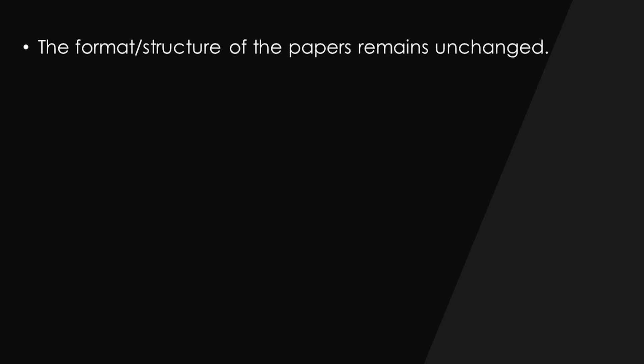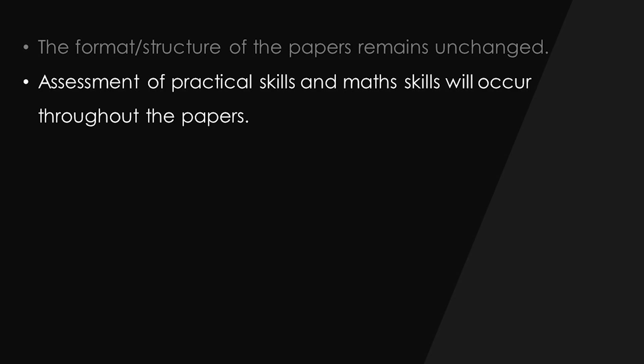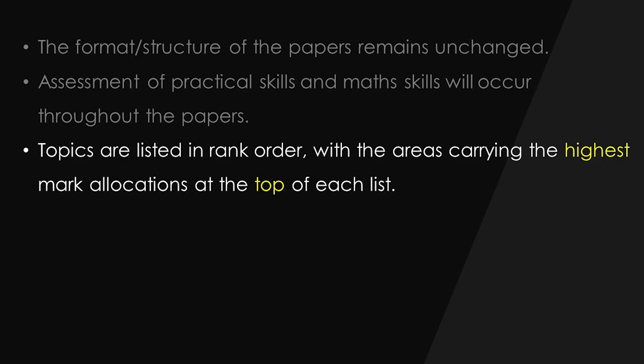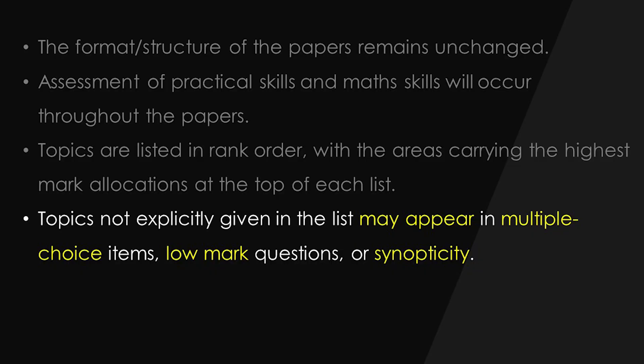In summary, here's what you need to know. Firstly, the structure and format of the papers is remaining unchanged — it's going to be the same as past papers from 2018, 2019, 2020 and so on. Secondly, there will still be assessment of your practical skills and mathematical skills throughout the paper, so you need to know about things like percentage uncertainty, absolute uncertainty, and how you deal with anomalous data. Third, when the topics are listed they are given in rank order — the topic at the top is worth the most marks. But this is really important: although the topics are listed, there will be questions from across the entire specification — everything you've been taught for A-level.